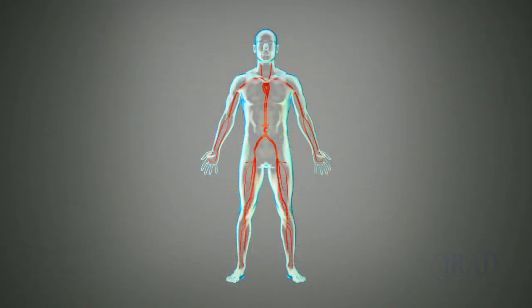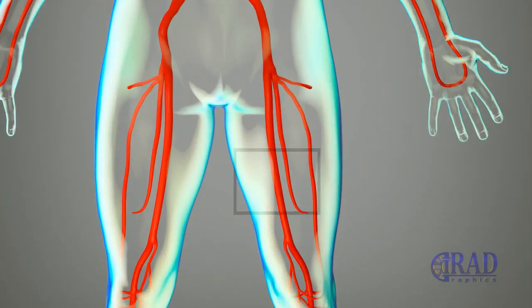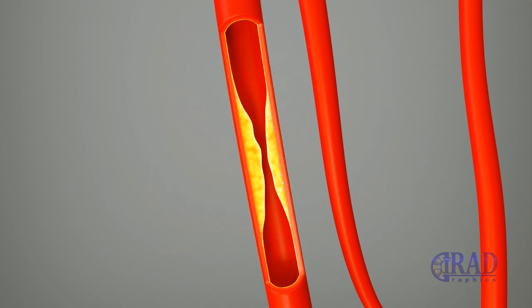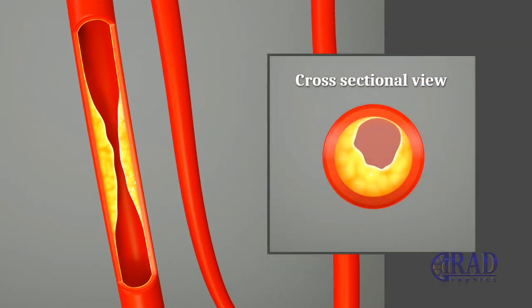Peripheral arterial disease primarily affects the extremities, most commonly the legs, leading to reduced blood flow and causing symptoms such as pain, cramping, and fatigue. The interventions involve a series of image-guided, minimally invasive endovascular procedures designed to recanalize and treat the narrowing of major peripheral arteries, thereby restoring adequate blood flow to the affected areas.